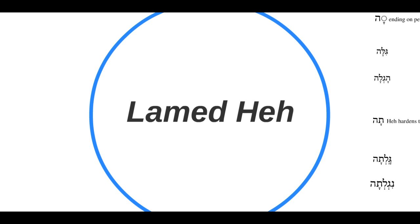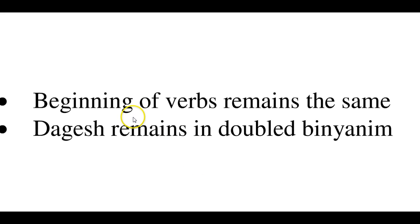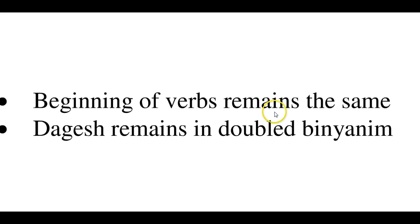So let's begin looking at them. First of all, there are going to be two rules that I want you to be aware of. The first one is that the beginning of the verbs in this particular group, even though they're weak, the beginning of the verbs basically remain the same. So there's no real change in the hitpa'el, the p-el, pu-al, or whatever. The vowel patterns used at the beginning are basically the same. We're mainly going to be concerned about the ending of the verbs — that's where the lamed hay really comes into effect.